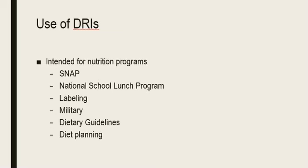The DRIs are used for nutrition programs like the Supplemental Nutrition Assistance Program (SNAP), the National School Lunch Program, labeling of nutrition facts, military feeding practices, nutrition policies, and diet planning. It is always important not to exceed the upper level for any nutrient. Also keep in mind that the DRIs are for healthy individuals, not for those who are malnourished or have any disease, which can increase their need for certain nutrients.